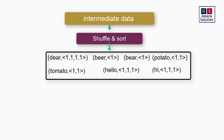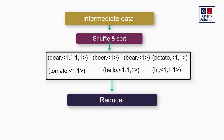For example, 'deer 1, deer 1, deer 1, deer 1' — four key-value pairs — after shuffle and sort become 'deer, [1, 1, 1, 1]'. What you do with that collection of ones is your aggregation logic. After the shuffle and sort phase you can see the data is organized cleanly. I now need to pass this shuffled and sorted data from the shuffle and sort phase to my reducer.